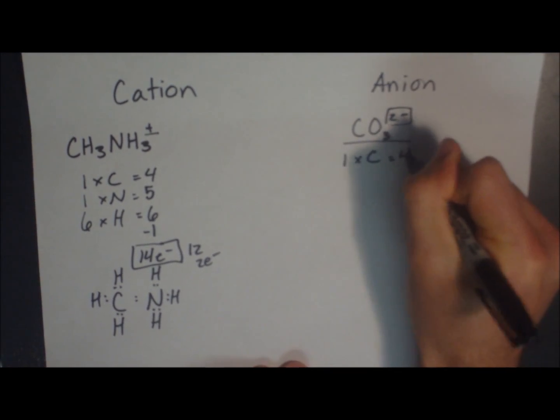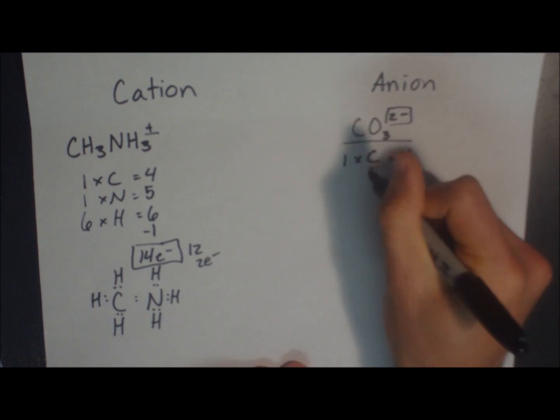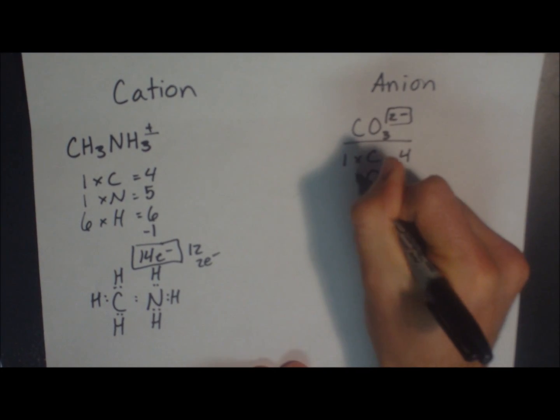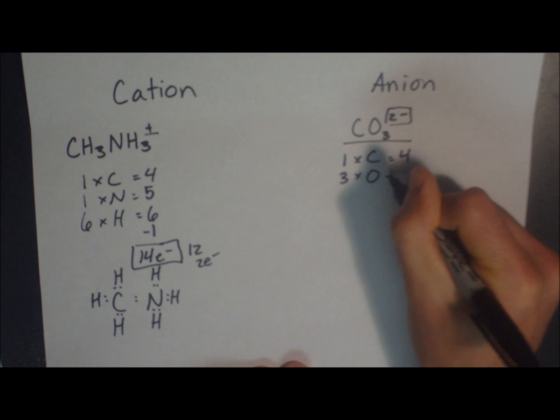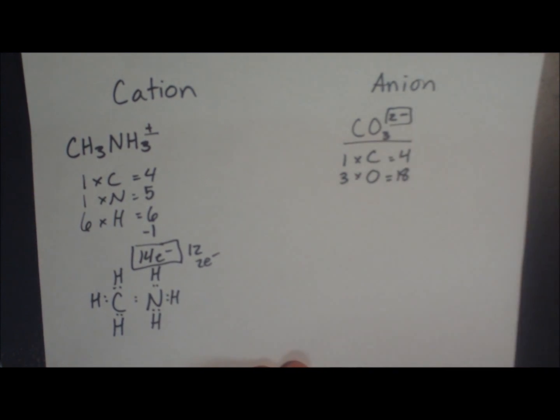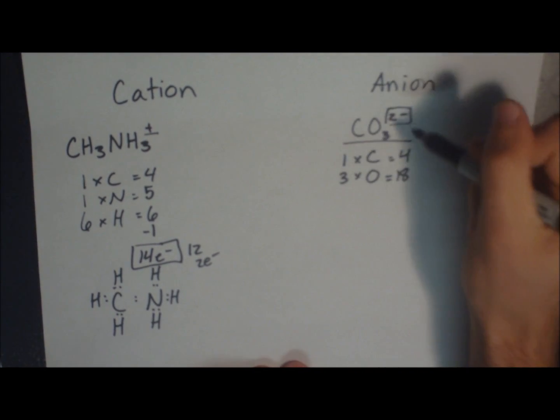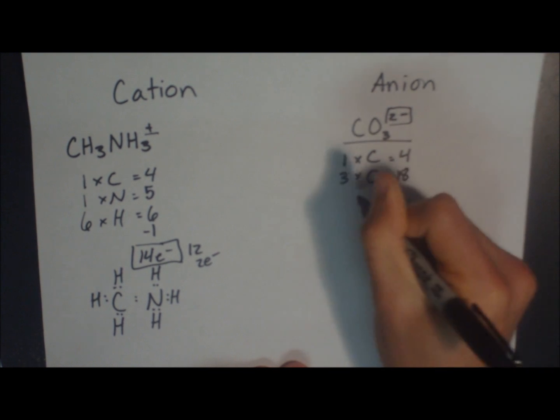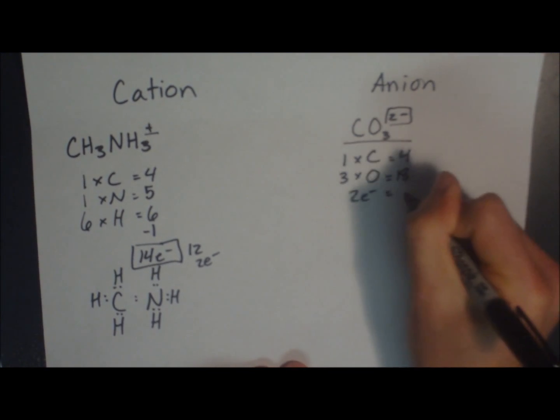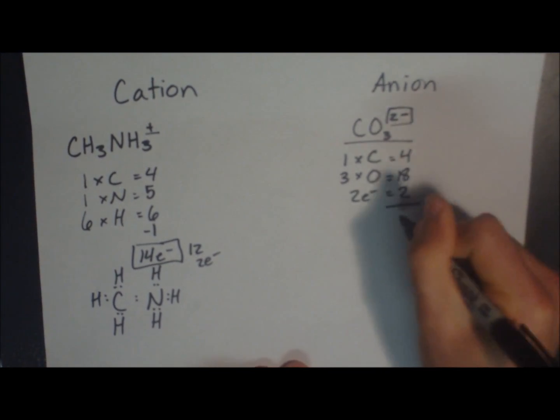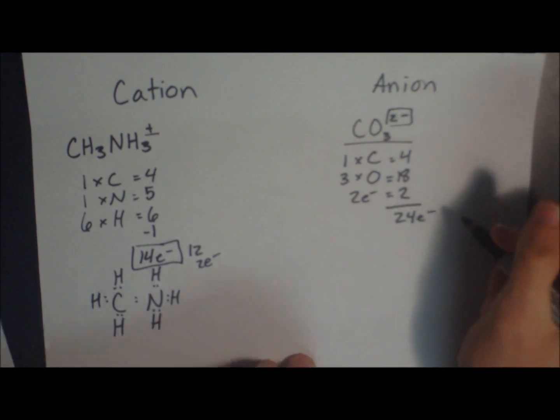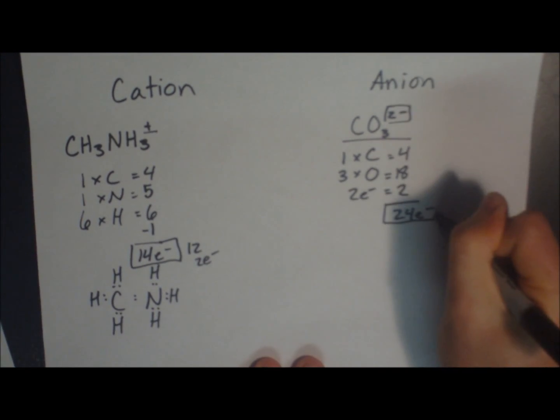We have 1 carbon. Oxygens are a group 6 element, which means they only have 6 valence electrons. Add in the 2 electrons, totaling 24 usable electrons in this molecule.